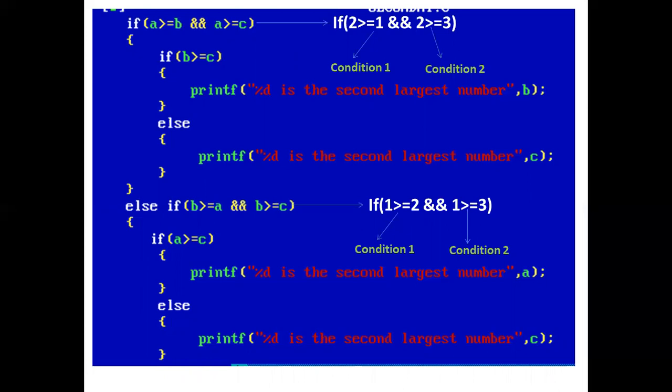Condition one — 2 >= 1 — is true. But condition two — 2 >= 3 — is false. So the control comes out of the if block.